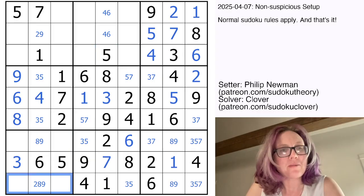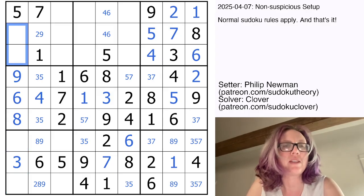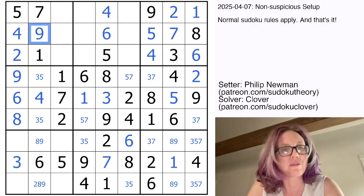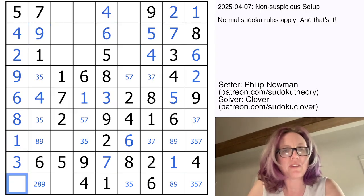Now, what else do we need to do here? In this column, which is nearing completion, we need 1, 2, 4, and 7. So these can't be 1 or 7, because those are already in the region. So that'll be my 2 and 4. The 4 tells me which way around those go. That's now a 9, and the 4 resolves this 4, 6 pair. So these are going to be my 1 and 7 to finish the column.